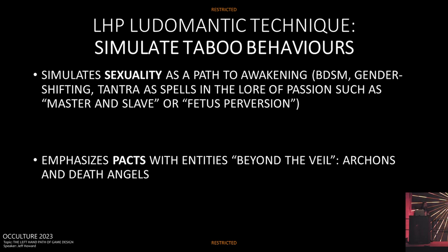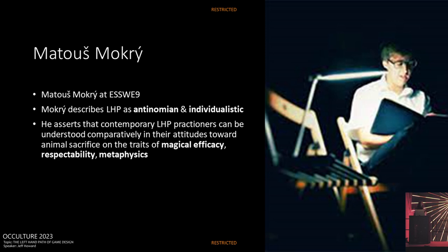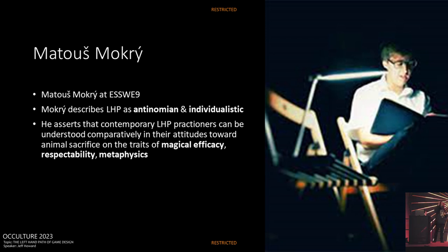Having explored these two branches of the left-hand path current, let me zoom out and give some context. This is Matus Mokri, who gave what I thought was the best talk at As We Nine. He was talking about different left-hand path attitudes toward animal sacrifice. Matus describes the left-hand path as a modern movement from the 1960s and 70s that defines itself as antinomian — against the law — and individualistic. He does a beautiful, rigorous comparative study of left-hand path thinkers and the way they negotiate the idea of animal sacrifice in the modern world, on different criteria like magical efficacy, respectability, and metaphysics.